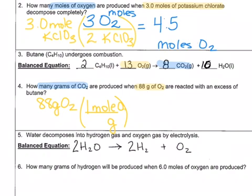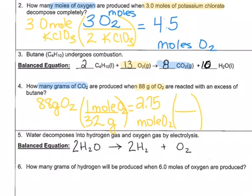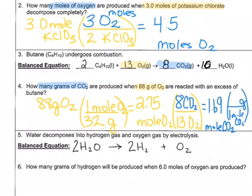One mole of oxygen weighs 32 grams — that's my molar mass — which converts my answer into moles of oxygen. So I have 2.75 moles of oxygen. Now I need to get to carbon dioxide using my mole-to-mole ratio from my balanced equation. According to the balanced equation, 13 moles of oxygen reacts to produce 8 moles of CO₂. That gives me 1.69 moles of carbon dioxide.